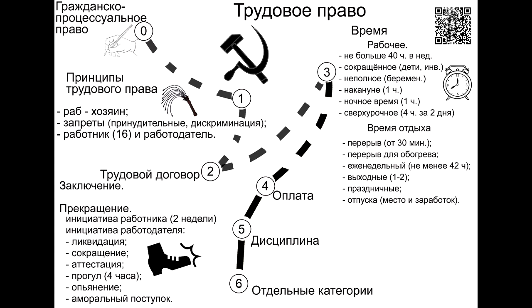Now let us look at the second aspect: employment contract. An employment contract is a voluntary agreement between an employee and an employer regarding essential working conditions. As a general rule, an employment contract is concluded indefinitely. Fixed-term contracts are concluded in cases stipulated by law for temporary work. If the employer actually allows the employee to perform their professional duties, the contract is considered concluded from that moment.